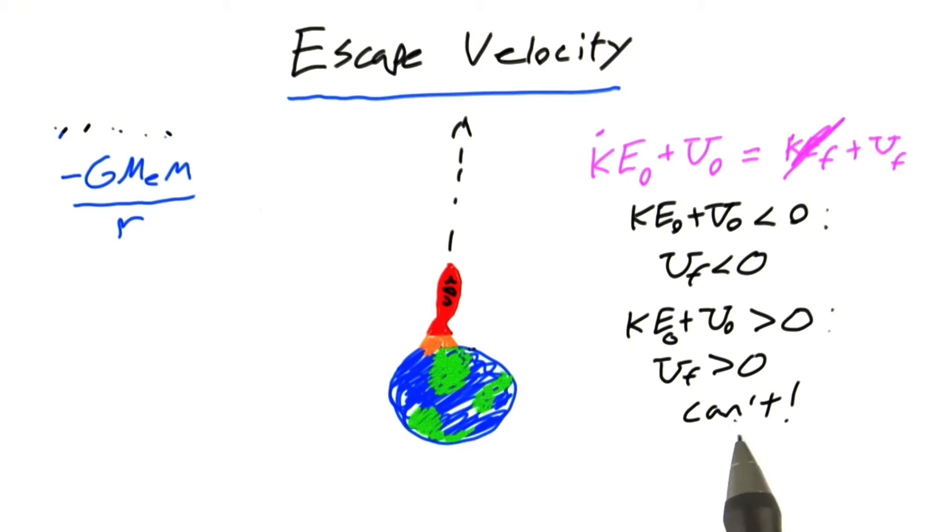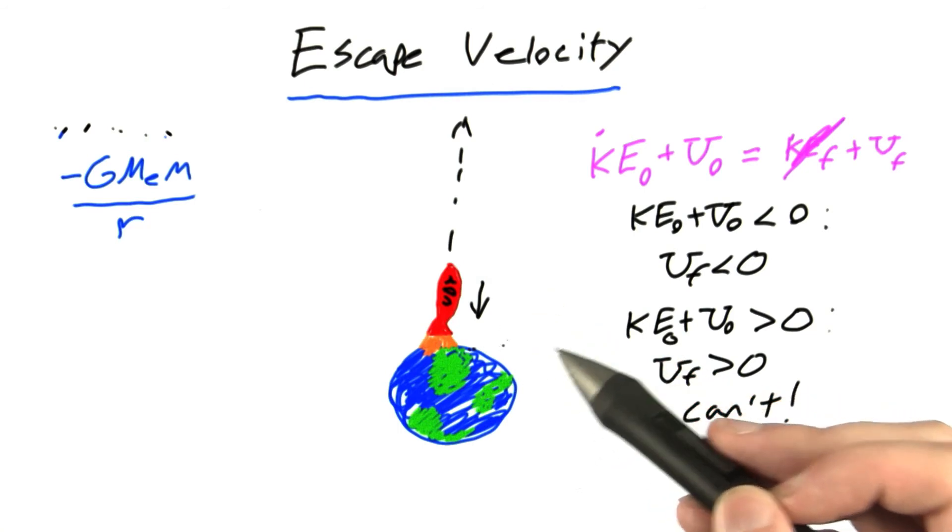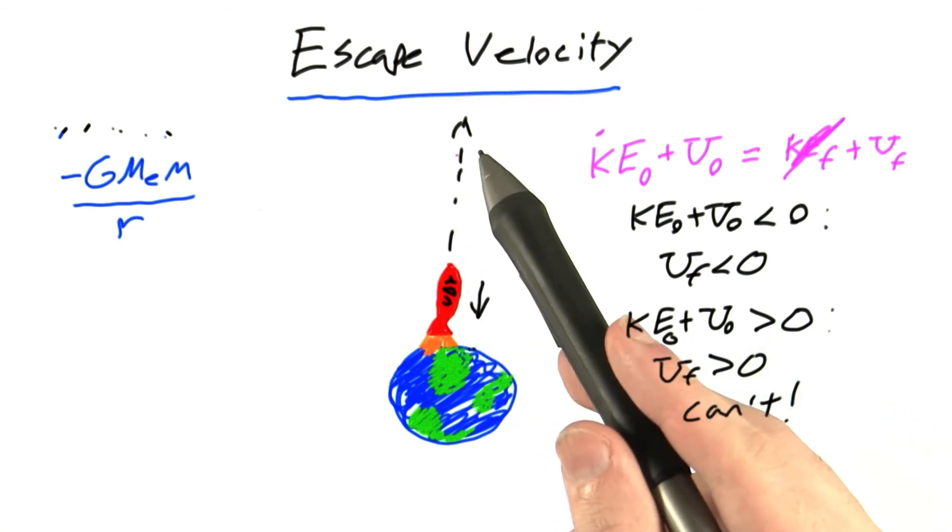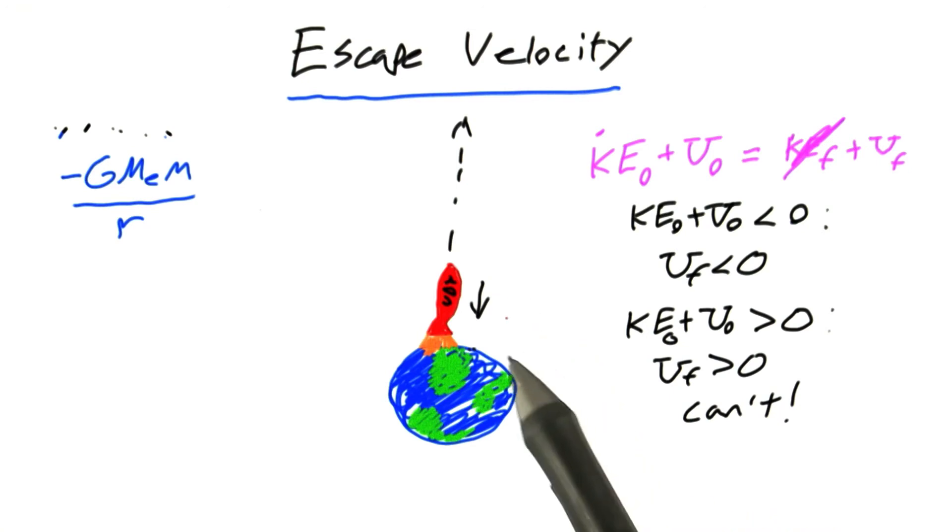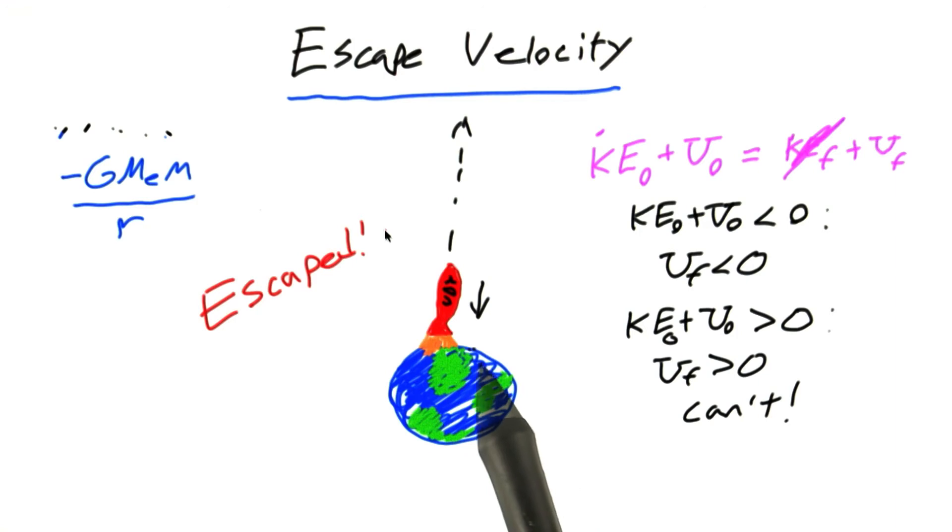Well, to get to this point, we assumed that the final kinetic energy was zero. If setting the final kinetic energy equal to zero leads to a contradiction, then it must be the case that the final kinetic energy can't ever be zero. And what does that mean? It means that the rocket never slows down to zero velocity. So even though it's always accelerating towards the Earth, it never slows all the way down and falls back to Earth. And so if the rocket never reaches zero velocity and never falls back to Earth, we can say that the rocket has successfully escaped.